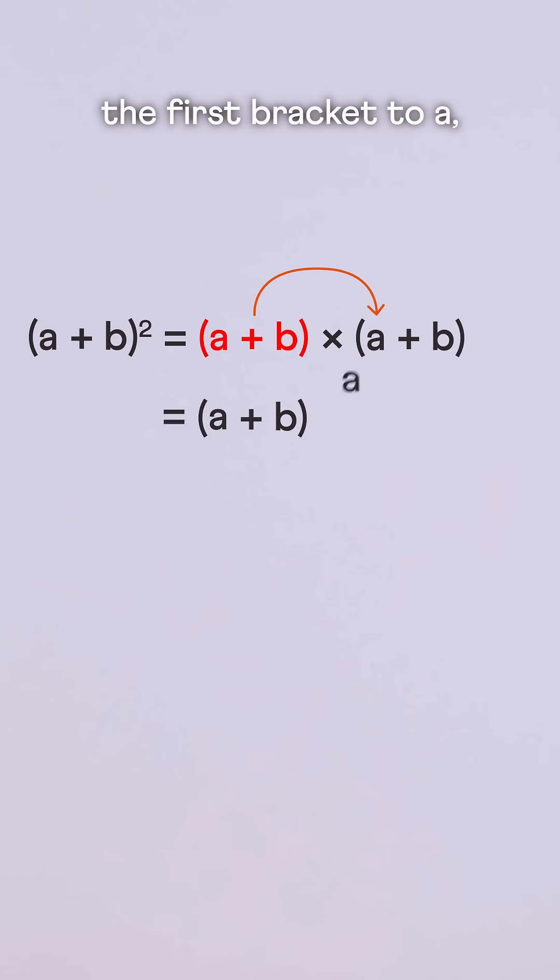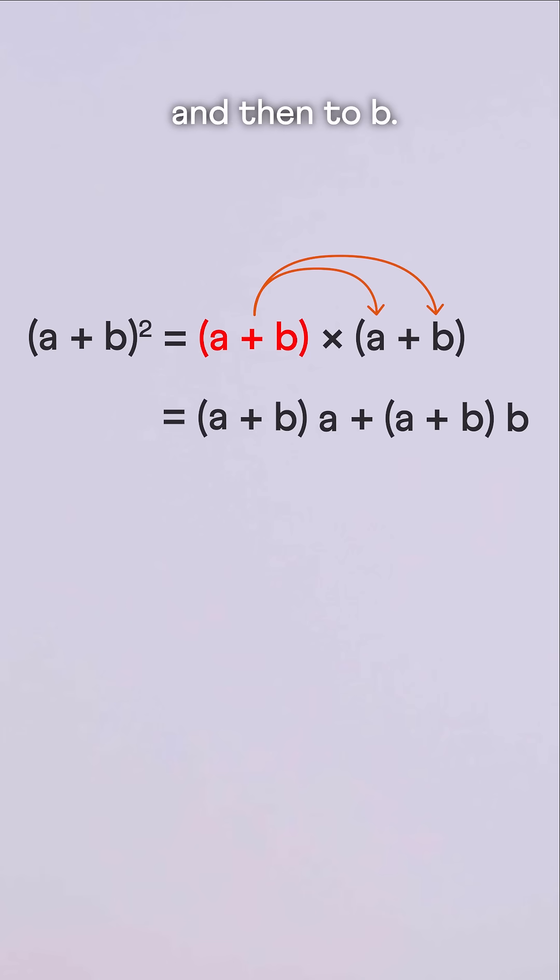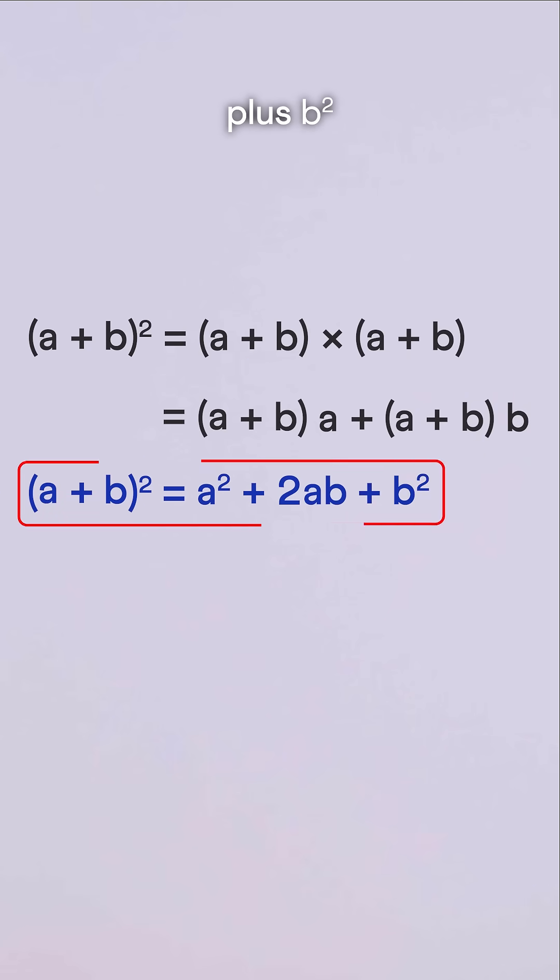Here we can distribute the first bracket to A and then to B. Distribute A here to A and B and B here to this A and B. Finally, we get our identity. A plus B whole squared is equal to A squared plus 2AB plus B squared.